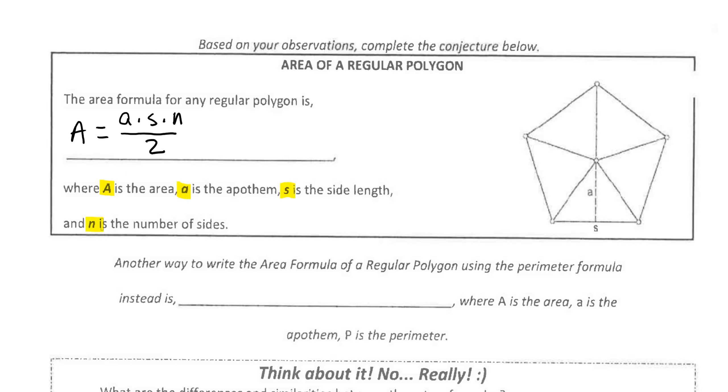Now, one thing that we can see here is if I take N times S, the number of sides times the length of each side, that gives me the perimeter.